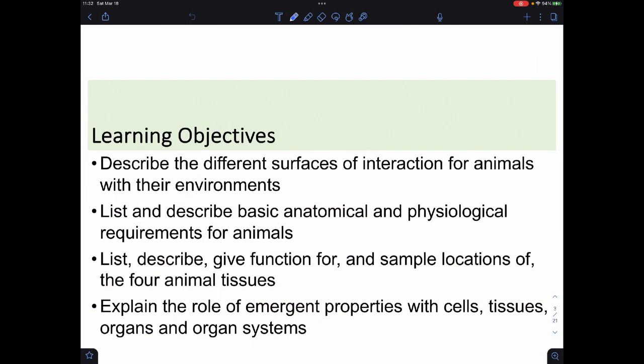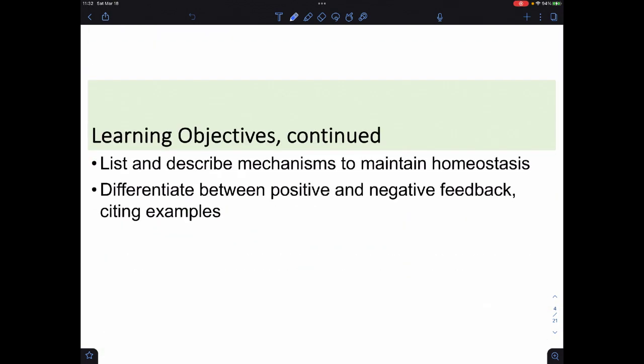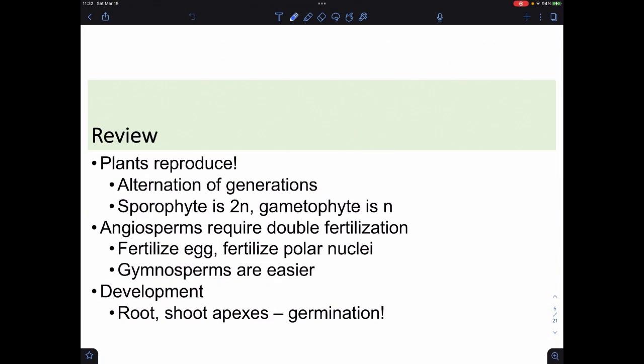So overview of what we're talking about today and our objectives. Last time we looked at how plants reproduce and the alternation of generations, looking at the sporophyte generation and the gametophyte generation, how they vary depending on which type of plant you're looking at. Angiosperms require double fertilization, so you need a sperm to fertilize the egg and another sperm to fertilize the polar nuclei. Gymnosperms are just one egg, one sperm, easy. We dealt briefly with how they develop in terms of the positioning of the root and shoot apexes and then they germinate.